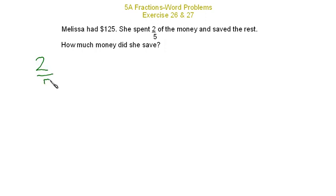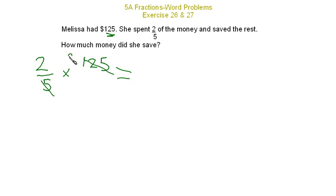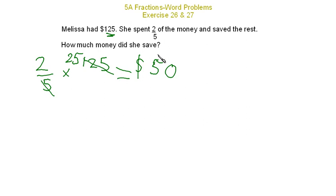Now there's actually a third way to do this, and this is using our bar graph, which I will do a very crooked one right here. We're going to separate the bar graph into five units, because that's what our denominator is — that's the amount of pieces that her money was broken into. She spent two out of those five units. All five units is equal to the hundred and twenty-five dollars.